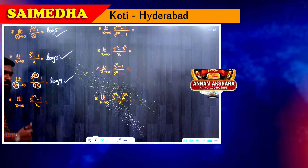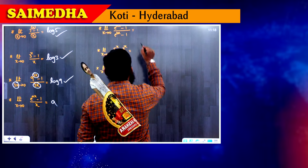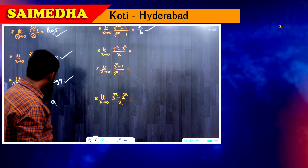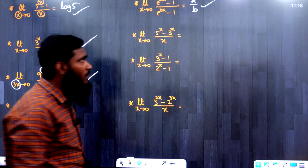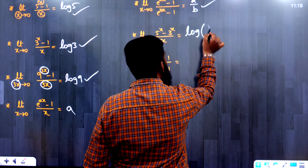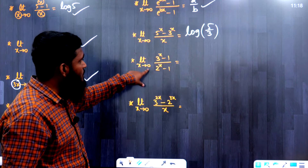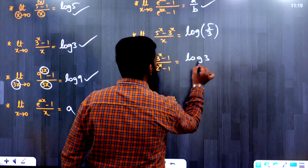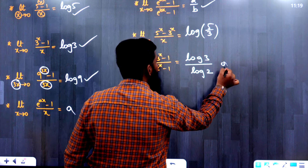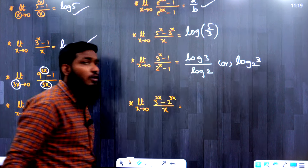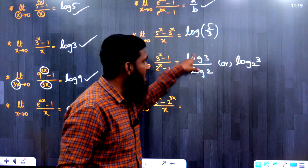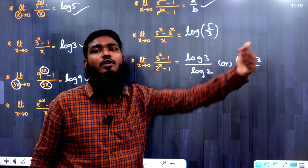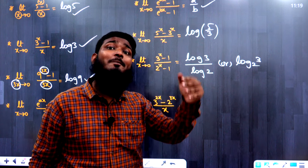Next: limit x tends to 0, 5^x minus 3^x by x. This looks like the a^x minus b^x by x formula. The answer is log(5/3). Next: limit x tends to 0, 3^x minus 1 by 2^x minus 1. Using the formula a^x minus 1 by b^x minus 1 equals log a by log b: the answer is log 3 by log 2, or equivalently log 3 base 2. Remember, log(a/b) gives log a minus log b, which is different from log a by log b.